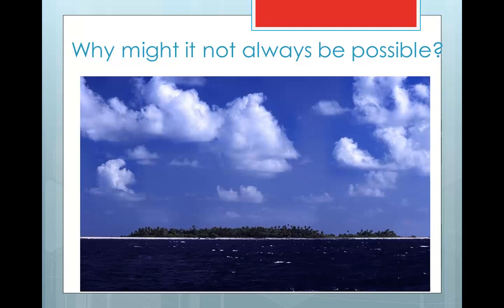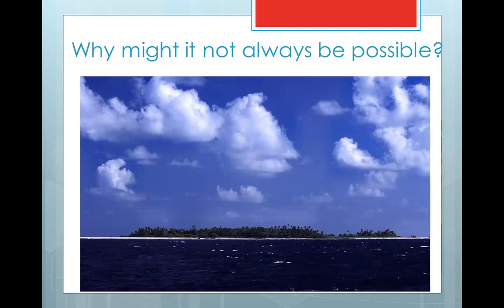Sea levels are rising due to climate change for two reasons. First, the sea is expanding due to thermal expansion. Second, sea levels are rising due to glacial melt and ice melt. You can see from this image that the sea isn't particularly high, and the island isn't particularly high either, and as a consequence it is liable to flood. It will in the end completely disappear, and there is concern that the 10,000 people who live on these island chains are going to have to move away. New Zealand has prepared itself to cope with these people.